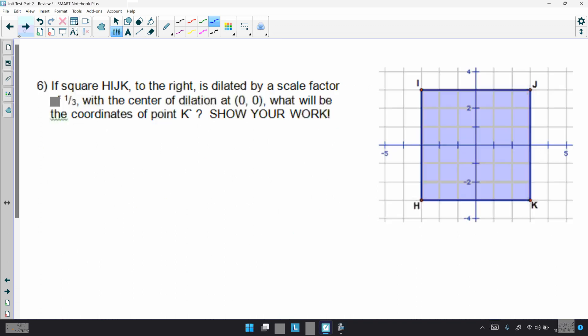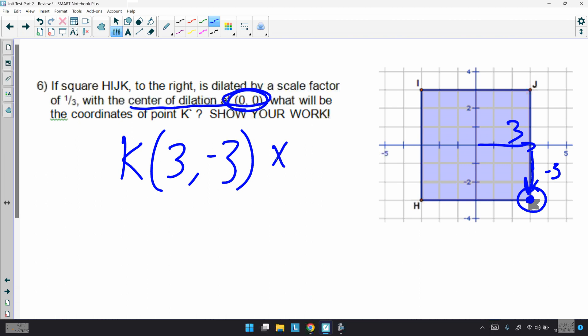6. If square HIJK to the right is dilated by a scale factor of 1 third, with the center dilation at 0, 0, what will be the coordinates for point K prime? Show your work. All they care about is K. It's right there. So, if you went over 3 and then down 3, K's coordinates is 3, negative 3. Since the center dilation is at the origin, we simply just need to multiply this by a third to get our K prime. 3 times a third is 1, and then negative 3 times a third is negative 1. And that's all there is to it.